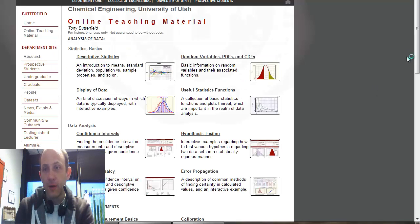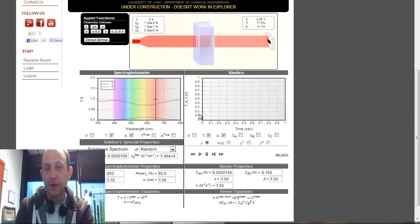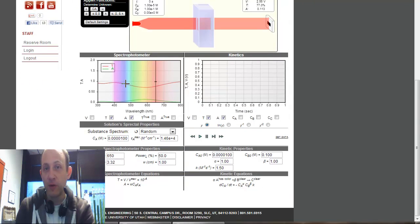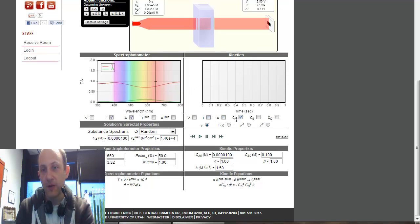I'm going to go to the online homework, click on the kinetics simulation. Now, we're not using the spectrophotometer in this homework. We did in the last one. In this one, we're just using the kinetics side. So, I'm just going to plot the concentration of A over time.